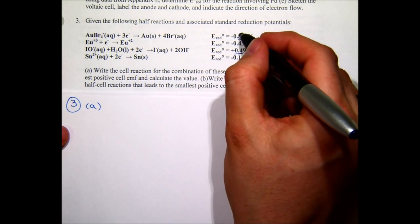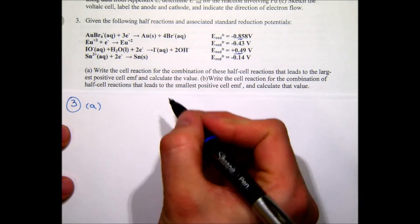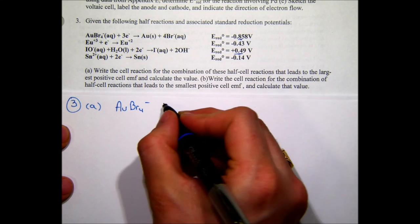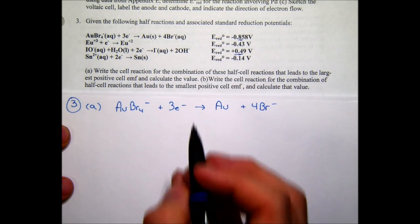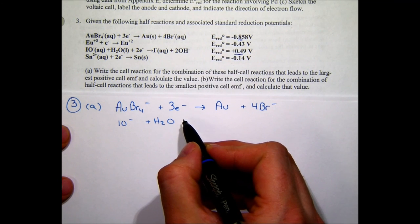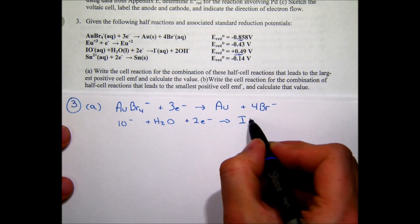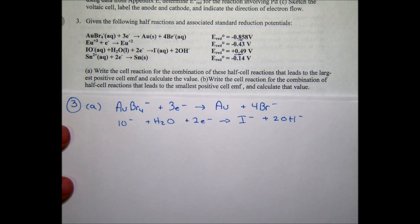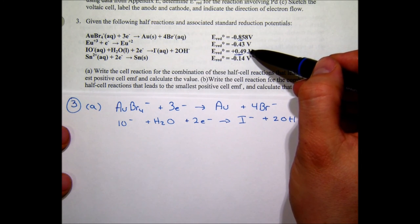The half reactions are: AuBr₄⁻ + 3e⁻ → Au + 4Br⁻ (reduction potential +0.858 V) and IO₃⁻ + H₂O + 2e⁻ → I⁻ + 2OH⁻. The most positive value undergoes reduction — that's the gold bromide half reaction at +0.858 V — so the other is oxidation. We rewrite the iodine half reaction as oxidation and multiply to balance electrons: multiply the IO₃⁻ reaction by 3 and the AuBr₄⁻ reaction by 2 to get 6 electrons each.